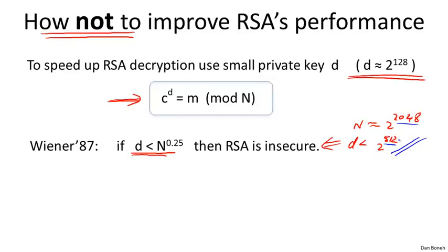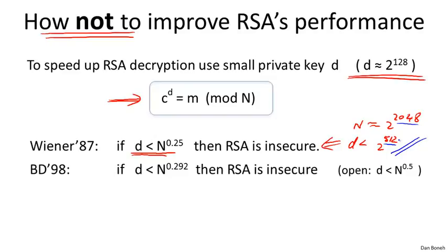It turns out even that's not secure. There's an extension to Wiener's attack, much more complicated, that shows that if d is less than N to the 0.292, then RSA is also insecure. The conjecture is that this is true up to N to the 0.5, so even if d is like N to the 0.4999, RSA should still be insecure, although this is an open problem. It's been open for about 14 years and no one can progress beyond 0.292. It seems strange — why would 0.292 be the right answer?